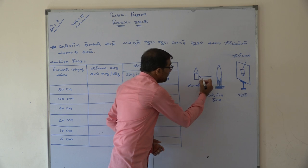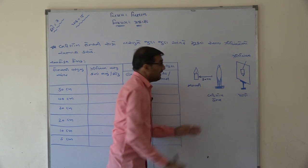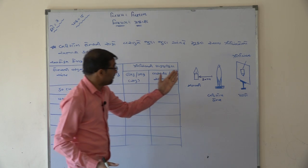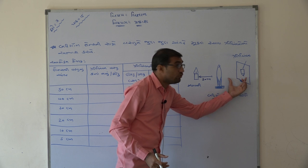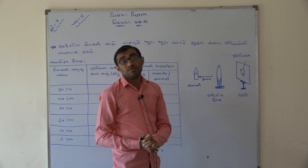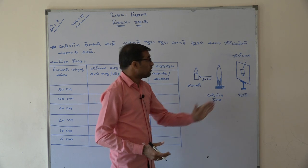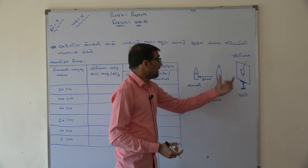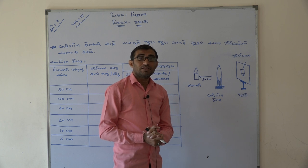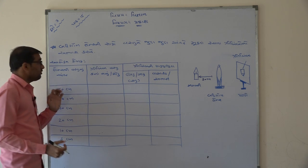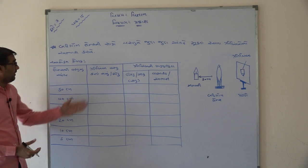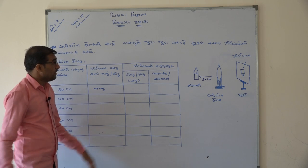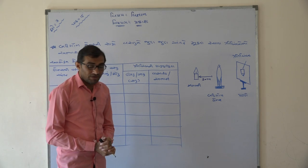If the following experiment is equal to 50 cm, if they're able to solve it, they are not possible to do this. That's why the experiment is not possible.